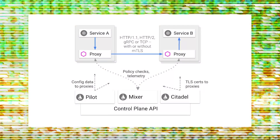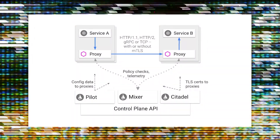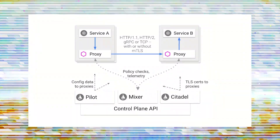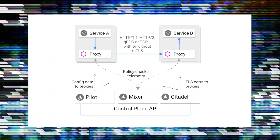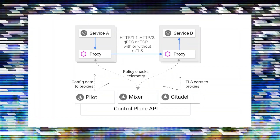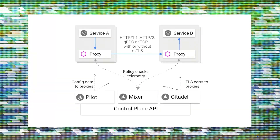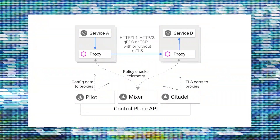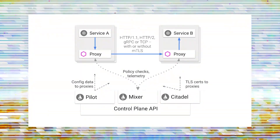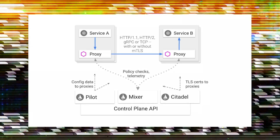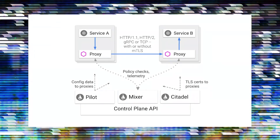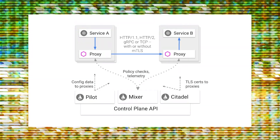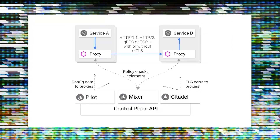Then we have Citadel, which manages the security aspects of the service mesh, providing features like mutual TLS for secure communication between services. Then we have Galley, which is a centralized configuration management system, ensuring that configurations are distributed correctly to all the Envoy proxies. So this is the architecture.